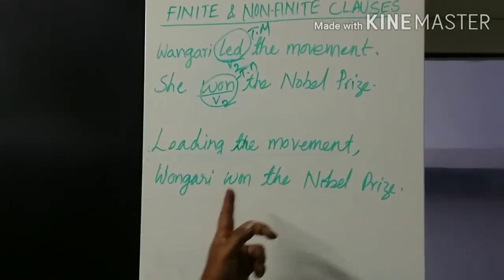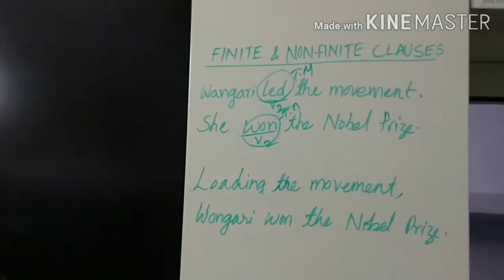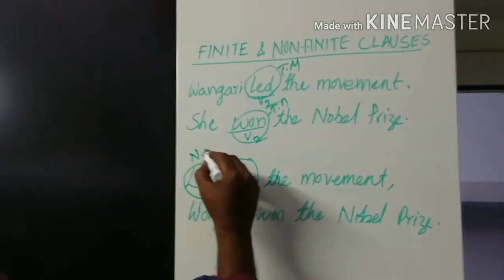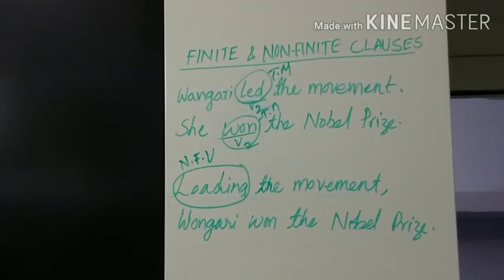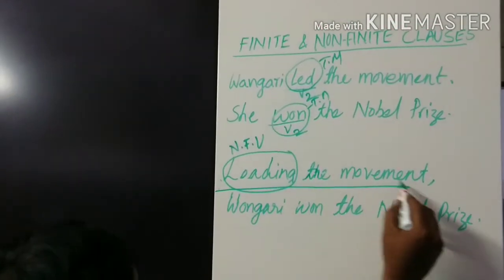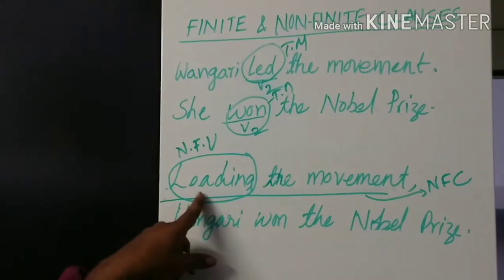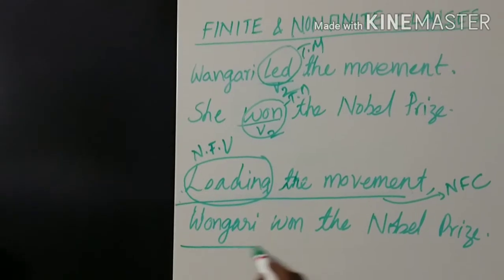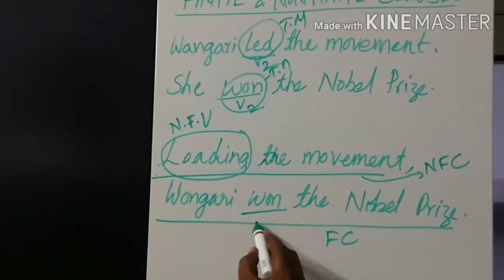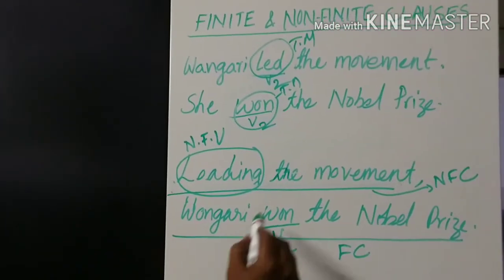Let us join these two sentences and make a single sentence: 'Leading the movement, Wangari won the Nobel Prize.' Here, 'leading' is called a non-finite verb, because 'leading' doesn't show any tense of that clause. This is the non-finite clause, and 'Wangari won the Nobel Prize' is the finite clause. It is finite because it shows the tense of the sentence — it is in simple past — so this tense marker shows the tense of the sentence.